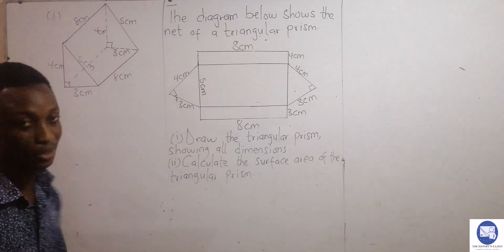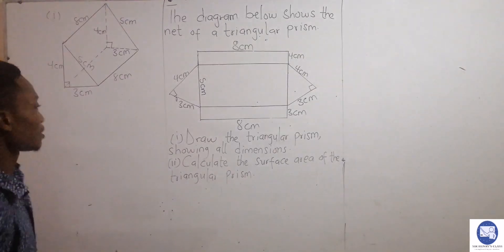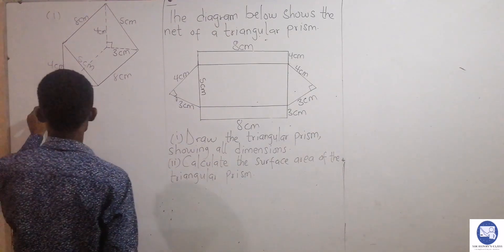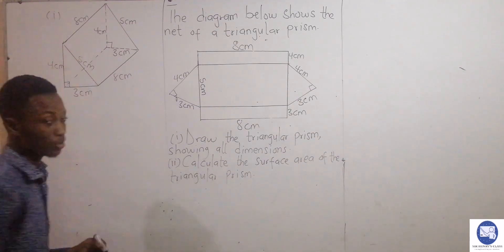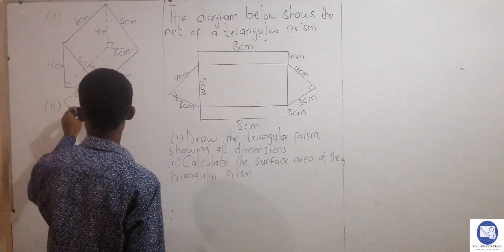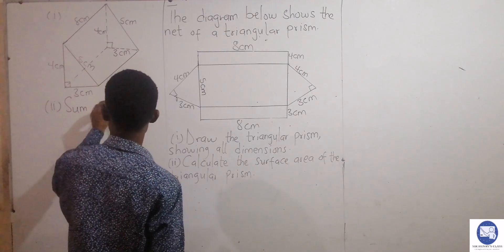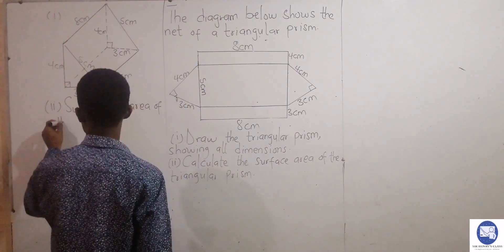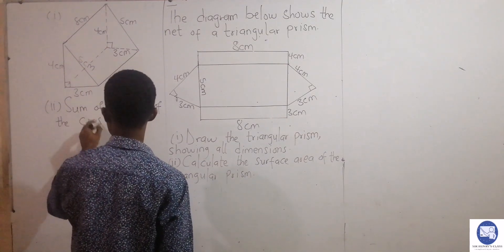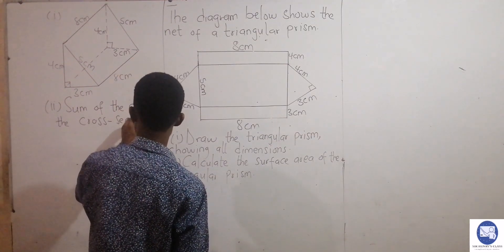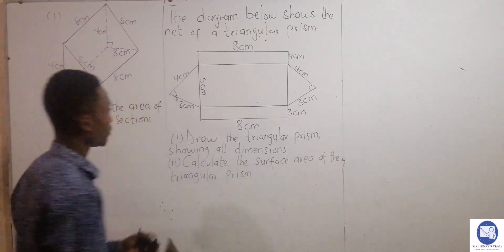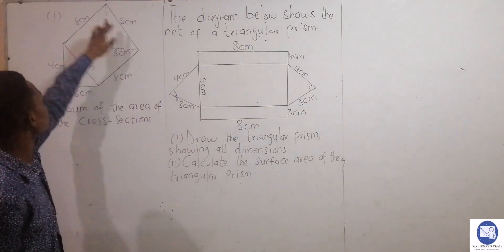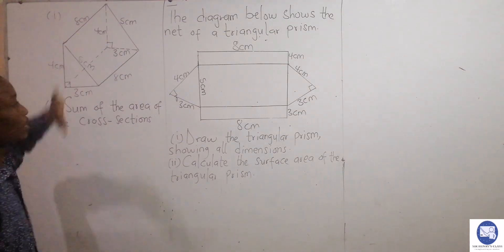If you have any questions, you can put them in the comment section. Now, part two: calculate the surface area of the triangular prism. How do we calculate the surface area? It is the sum of the areas of the cross sections. How many cross sections do we have? We have five faces.